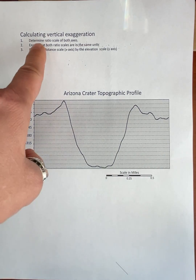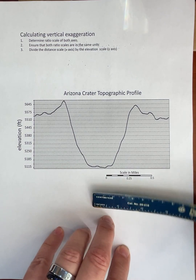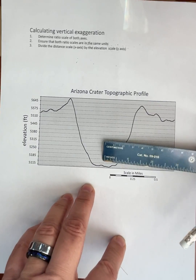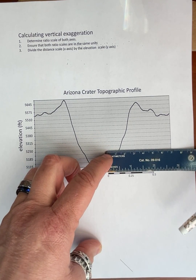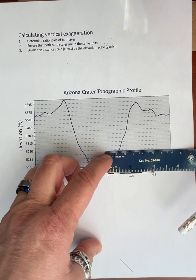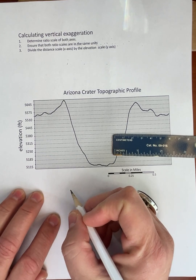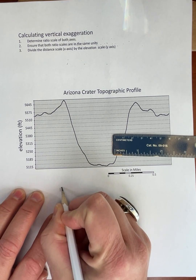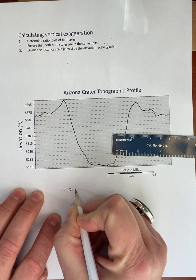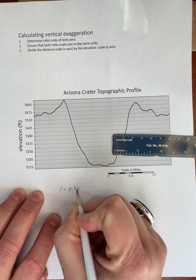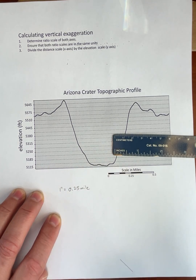The first thing we have to do is determine the ratio scale of each of the axes. On the horizontal scale, one inch equals 0.25 miles.